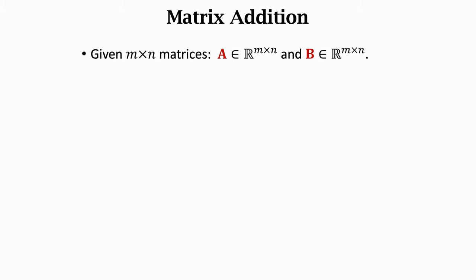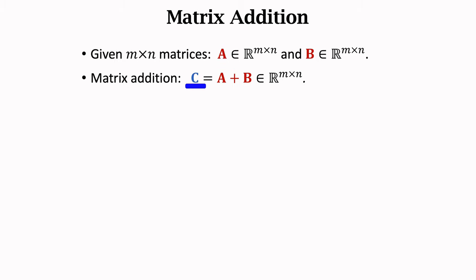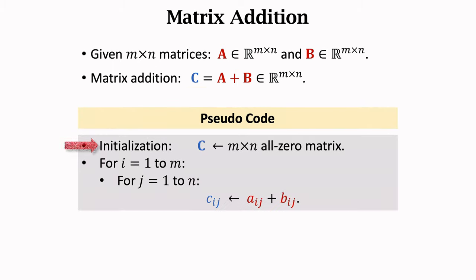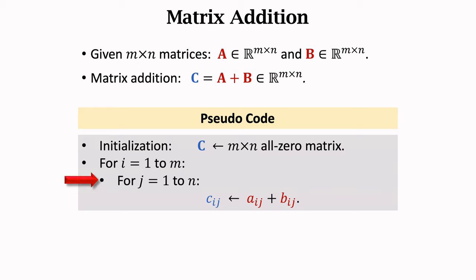Now let's do matrix addition. The inputs are two n by n matrices A and B. They must have the same shape. We want to compute A plus B. Let the sum be matrix C. The shape of C is the same as A and B. Initialize C to be an n by n all-zero matrix. Then perform the nested for loop. The outer loop increases i from 1 to m, where i indexes rows. The inner loop increases j from 1 to n, where j indexes columns. Compute A sub ij plus B sub ij and assign the sum to C sub ij.